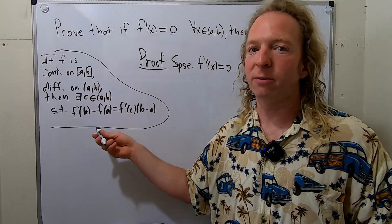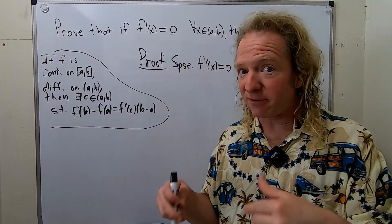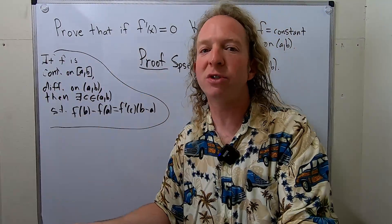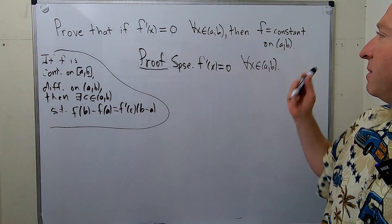Before we use the mean value theorem, let me just say this. The derivative is written down on the board. Therefore, f is differentiable. Because it's differentiable, it's continuous. So we can use the mean value theorem. So I'll just say that verbally. So now we have to show it's constant on (a,b).